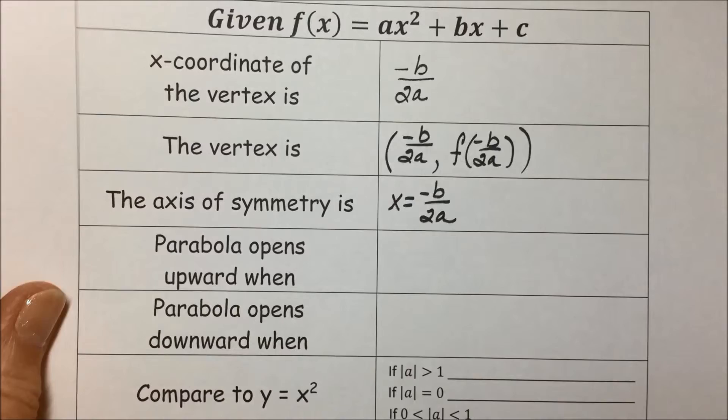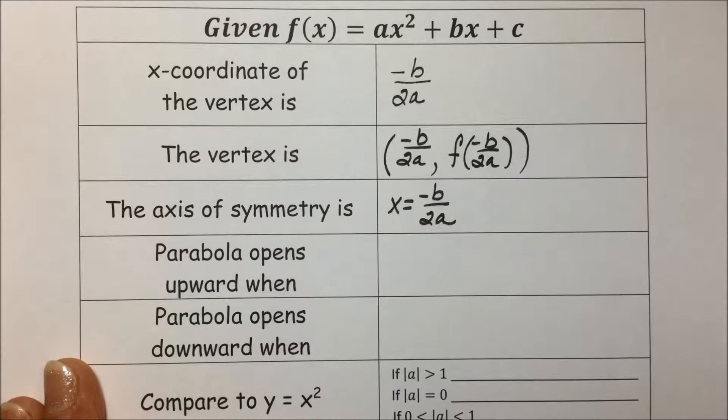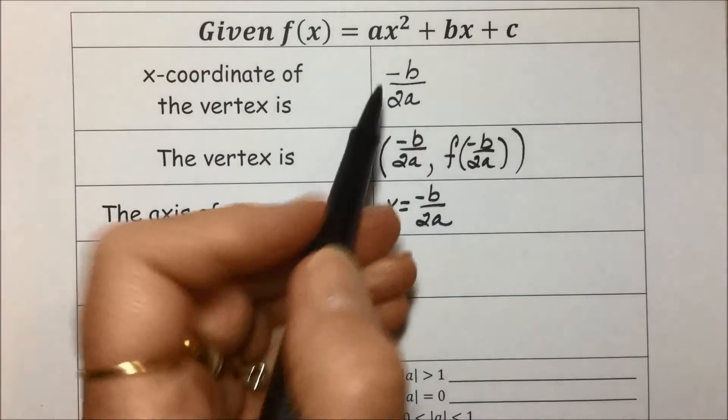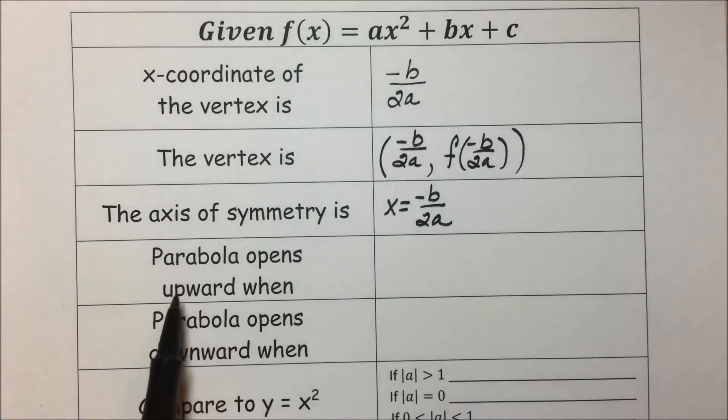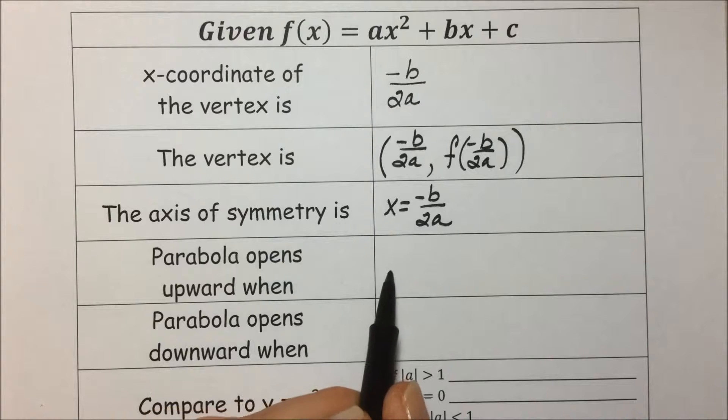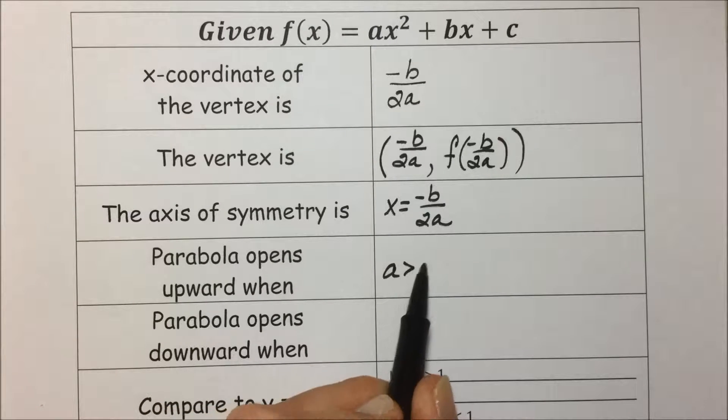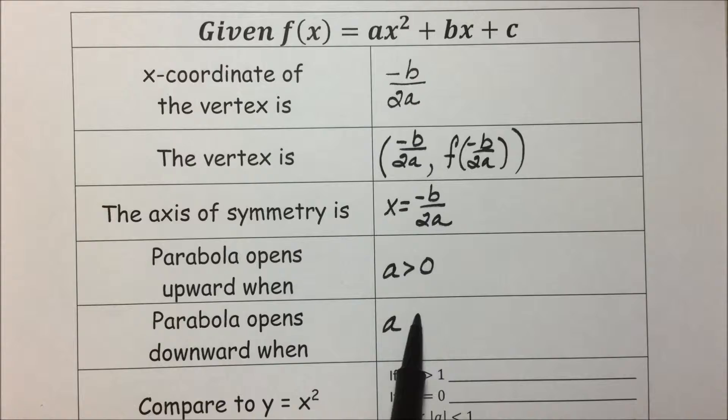To determine whether a parabola opens upward or not, we use the same relationship of looking at the coefficient on our x² term. A parabola will open upward when a is positive, which means it's greater than 0. It will open downward when it is less than 0.